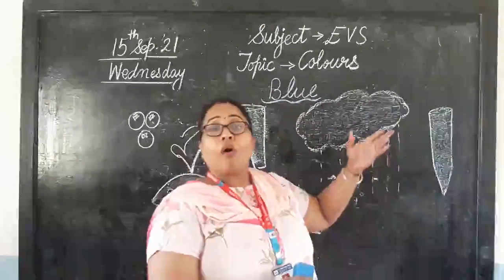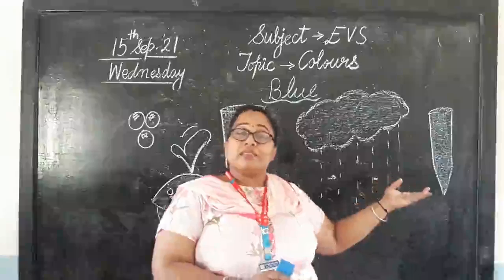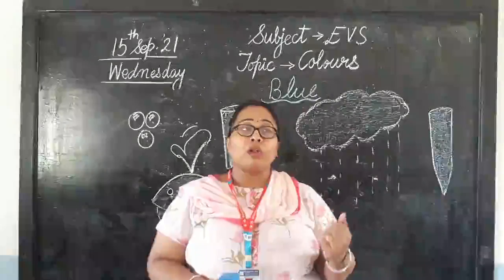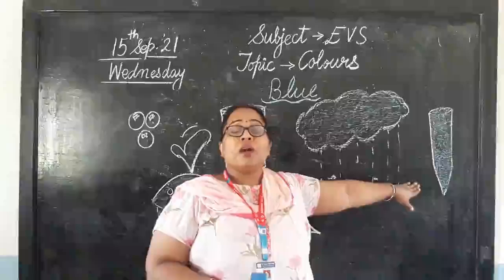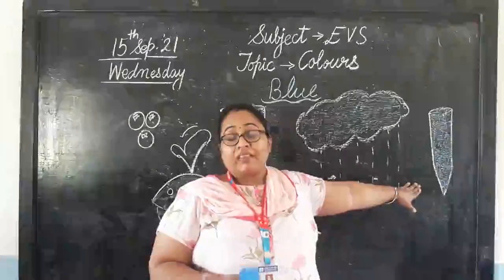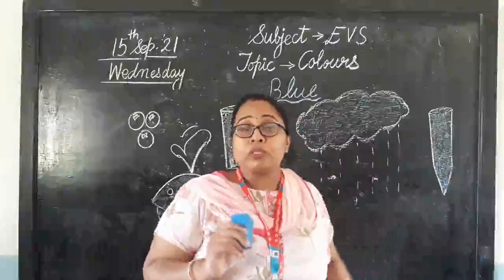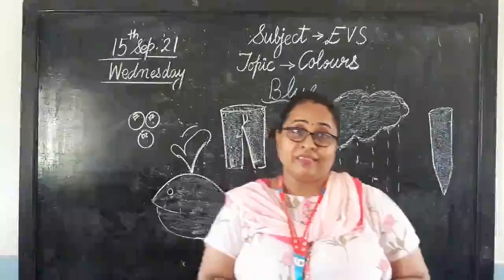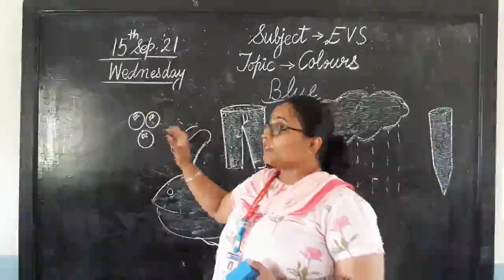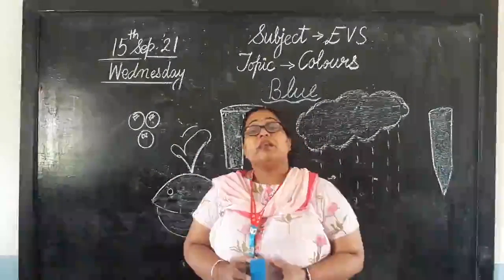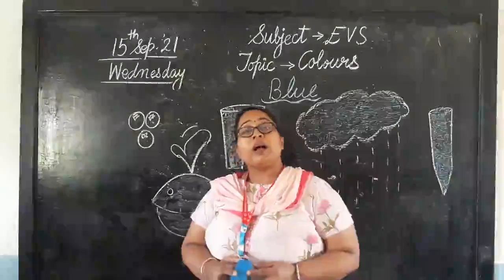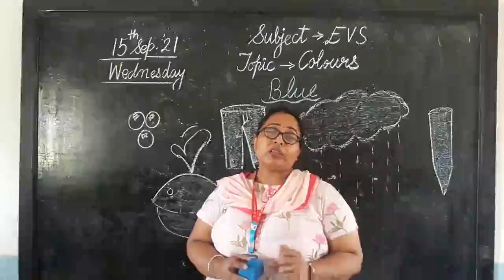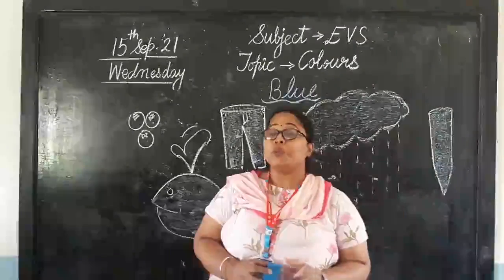We also have crayons — your color box is always having blue color in it. There is a fruit named blueberries. They are berries and they are blue in color, which is why we call them blueberries.